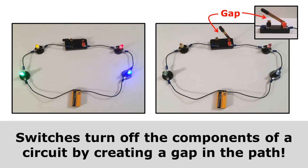Switches turn off the components of a circuit by creating a gap in the path. On the left, you can see that there are no gaps in this circuit, so all the light bulbs are glowing and electricity can flow from one side of the battery to the other. But on the right, you see that the switch is open, and that has created a gap in the path. Electricity can no longer go from one side of the battery to the other, so none of the light bulbs in this circuit are glowing.